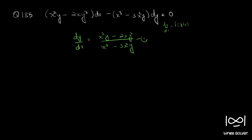So we put y equal to vx as a substitution for such questions. Differentiating this with respect to x on both sides, we get dy by dx equal to v plus x dv by dx.